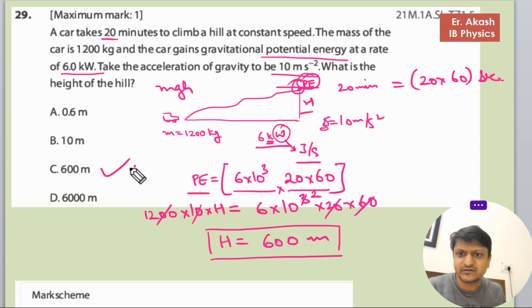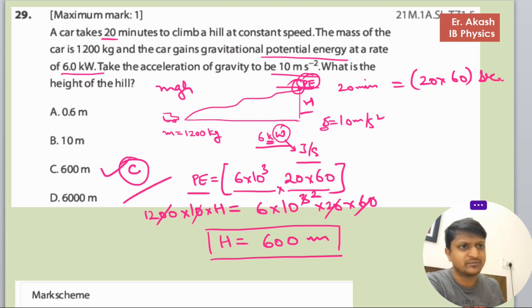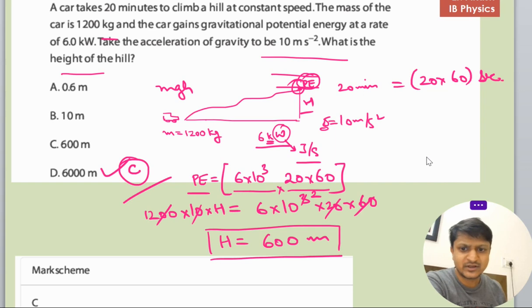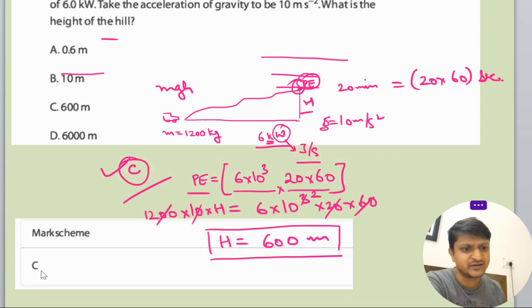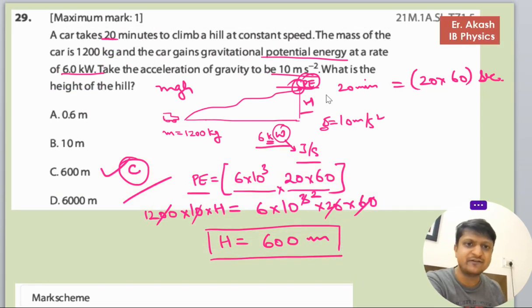600 meters - C will be the right answer. Now we'll check the mark scheme. Mark scheme says C is the right answer. So what we've done in this question: the potential energy at this point is mgh, and with the rate...